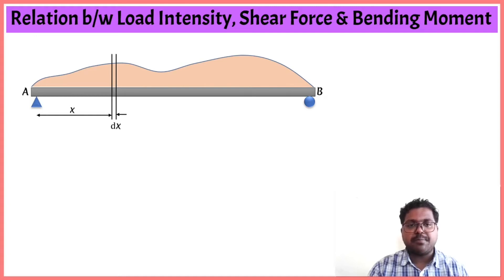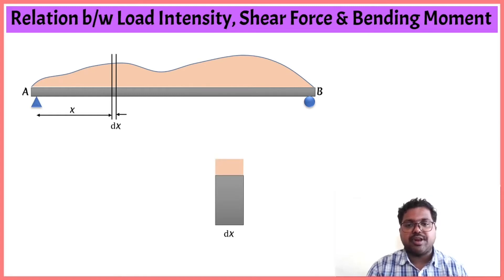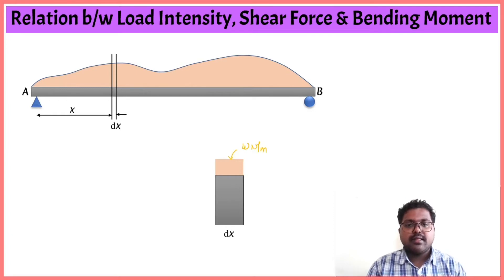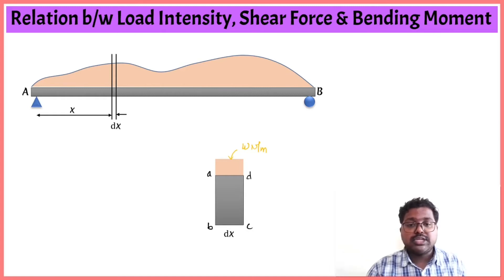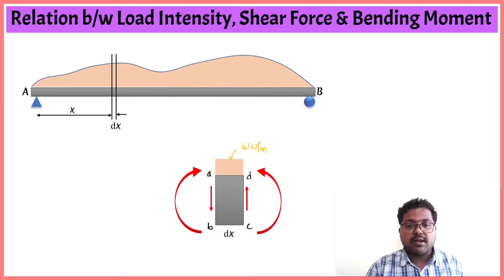For this strip dx, I am having a uniformly distributed load acting on it. Let us consider the intensity of this load as w Newton per meter. If we consider this strip element as ABCD, then we have both shear force and bending moment acting on face AB as well as on face CD.